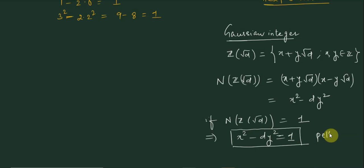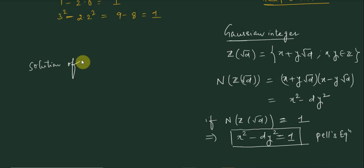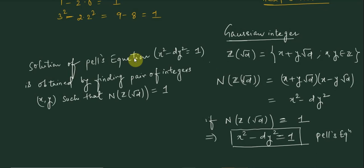This expression is Pell's equation. So we can say Pell's equation has a solution equivalent to when the norm of a Gaussian integer equals 1. The solution of x² - dy² = 1 is obtained by finding integer pairs (x, y) such that the norm of the Gaussian integer Z(√d) = x + y√d equals 1.